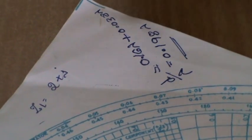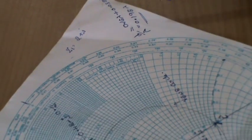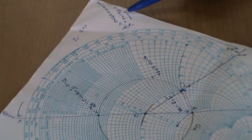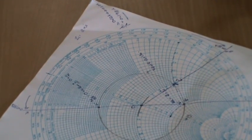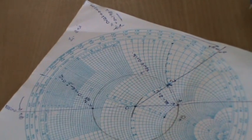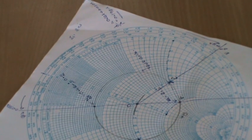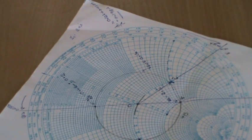Now we have got the value distance to the short circuited stub, that is d by lambda equal to 0.198 lambda. For more clarification just name the points as D and E. First design component is done, that is the distance.